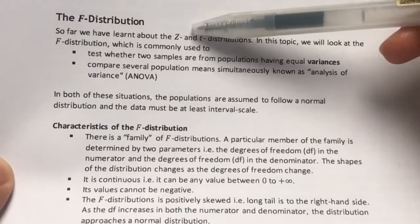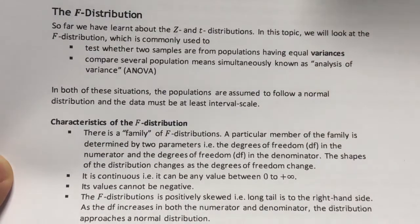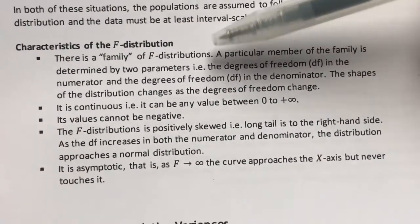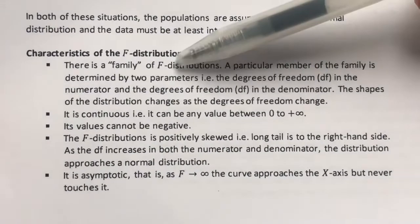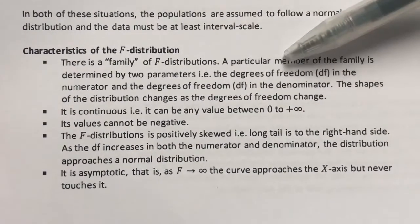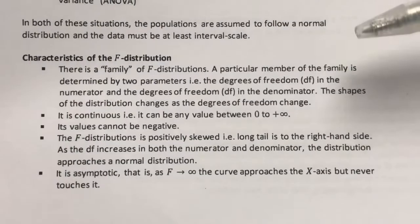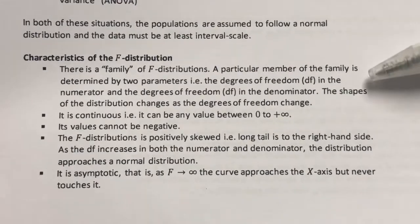Before this, we've been using the Z-distribution and the T-distribution. So how is F-distribution different from these two? Let's take a look at its characteristics. With the Z and the T-distribution, they are both characterized by the mean and standard deviation. However, for the F, this particular distribution is determined by two parameters: degrees of freedom in the numerator and degrees of freedom in the denominator. Later, when we look at the F-distribution table, I will show you what this means.